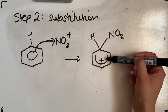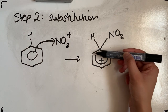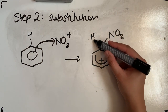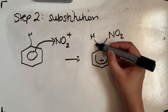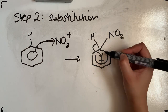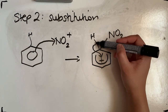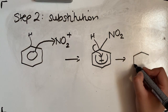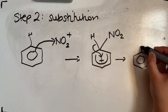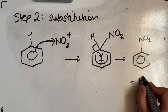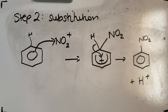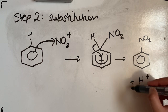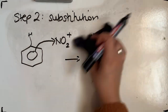To restore the delocalized structure, we need to gain two electrons. These come from the bond between hydrogen and the carbon — those electrons are donated back into the ring, restoring the delocalized structure. Since hydrogen has lost its electrons, we're left with H⁺. So in step two, we've formed nitrobenzene and released H⁺.